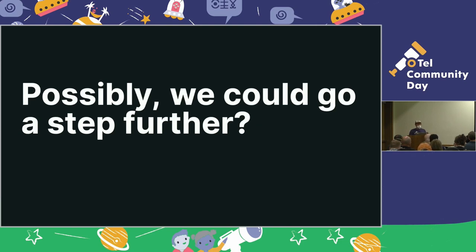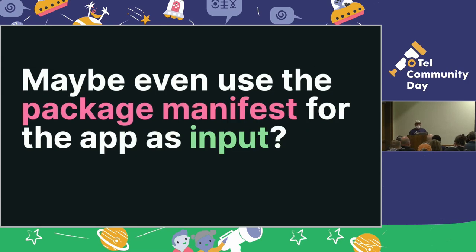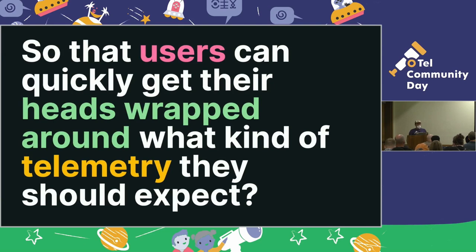If we had something like that, we might even be able to go another step and create a web UI for building these expectations — something that would walk new users through the experience of describing the transaction they're trying to trigger. A potential source of this information might be their package manifest. In most languages, there's some file you can grab that will tell you which libraries are installed in that application. You could then match those libraries with instrumentation we have available and start creating expectations with the user about what kind of data should be coming out of their app.